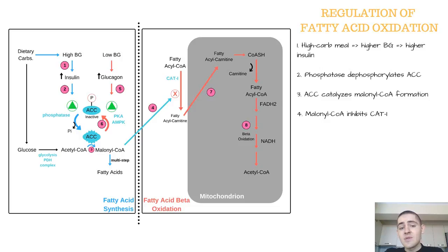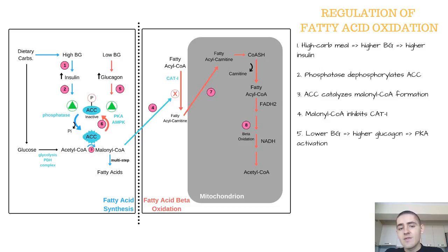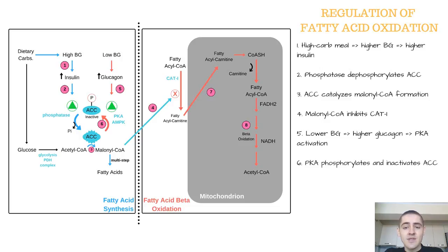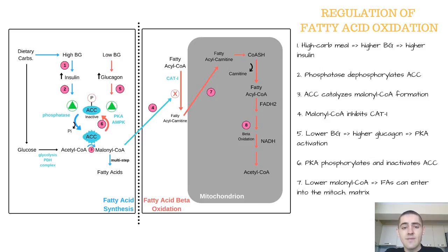Under conditions of low blood glucose, such as between meals or during fasting, higher levels of glucagon activate PKA, or cyclic AMP-dependent Protein Kinase A. PKA phosphorylates ACC, thereby inactivating it. Malonyl-CoA concentration decreases, which allows the entry of fatty acids into the mitochondria where they will undergo beta oxidation.